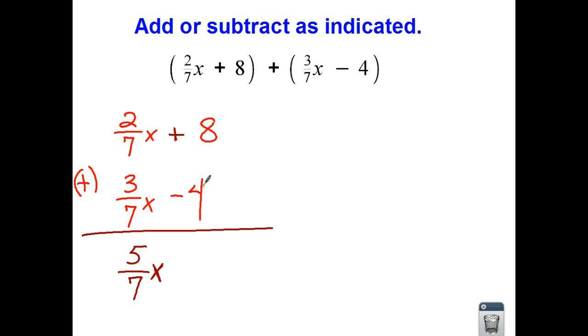So we read it as positive 8 added to negative 4. And we also recall our integer rules. So when we have a positive 8 and we add it to a negative 4, we come up with a positive 4. And there is your final expression.